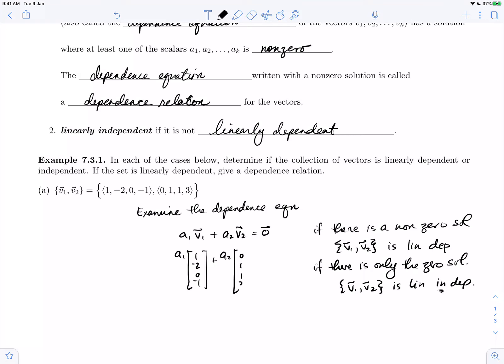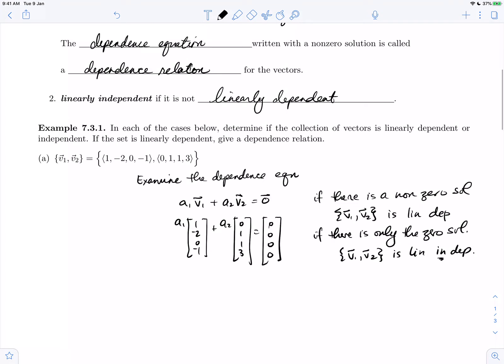This vector equation has constants, the entries of the zero vector, which are all zero. So the equivalent linear system is a homogeneous linear system: a1 plus 0a2 equals 0, minus 2a1 plus a2 equals 0, 0a1 plus a2 equals 0, and minus a1 plus 3a2 equals 0.